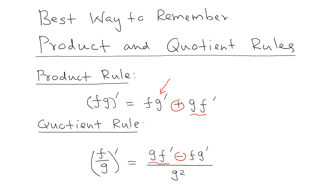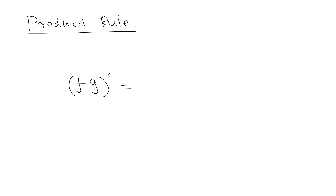Let's make these changes. For the product rule, it is very natural to take the derivative of the first term first. The first term is f, so we can write this formula as f'g + g'f. You can see it is very natural: when you have a product, you take the derivative of the first term, then multiply by the second.